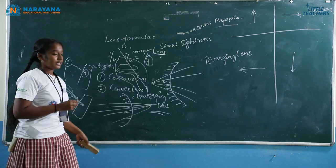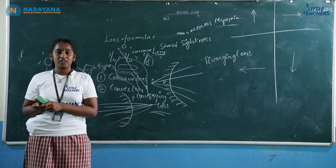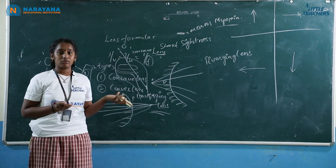So we conclude that the convex lens is a converging lens and the concave lens is a diverging lens. Thank you.